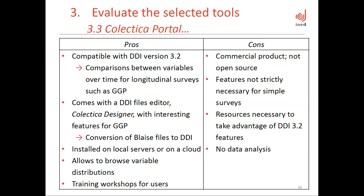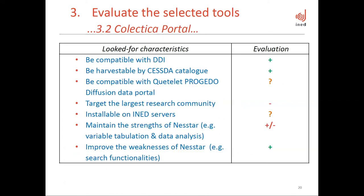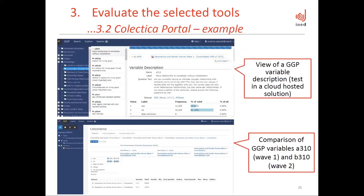Compared to our set of characteristics, Colectica is good because it is DDI compatible and harvestable by CESDA catalog (at least the Euro Question Bank) and improves Nesta's weaknesses. However, it is probably more suitable for a specialized public; we don't yet know if it can be installed on our servers (so far we tested the cloud-hosted solution); and we don't know whether it will be compatible with the Quetelet Progedo Diffusion data portal. Here you have a view of a GGP variable description screenshot from our test in the cloud-hosted solution, and below, a view of a comparison between two variables from the GGP survey about relationships without cohabitation — a comparison of two variables from two different waves, made possible by DDI 3.2 and Colectica Portal.